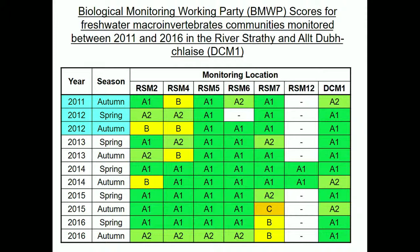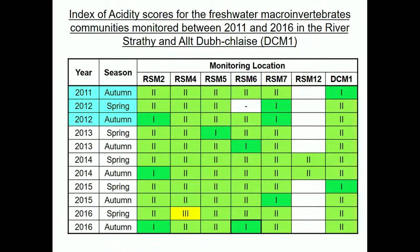What effect did this have on freshwater macroinvertebrates? It appears to have very little effect using biological monitoring working party scores on numbers and community composition. There were quantitative assessments of freshwater macroinvertebrates with significant variations between years — but these occurred before any of the development processes. The acidity index from these macroinvertebrates also showed no very significant variation between years beyond what could be discounted as background variation.